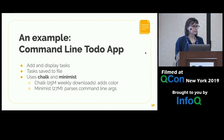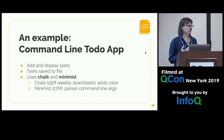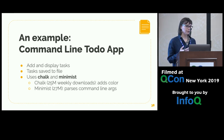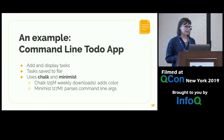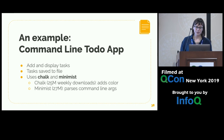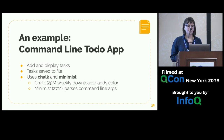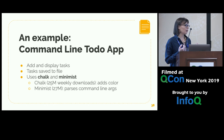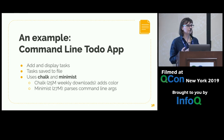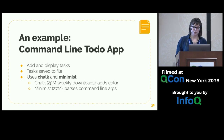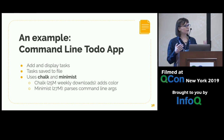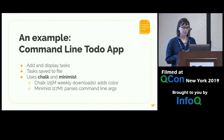To illustrate this, let's use a command-line to-do app — a very simple app that adds and displays tasks saved to a file. It uses two packages: chalk and minimist, which are very widely used JavaScript packages with over 25 million downloads each. Chalk adds color to whatever you're logging to the terminal, and minimist parses command line arguments.